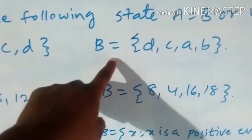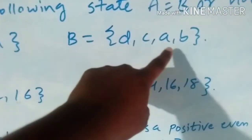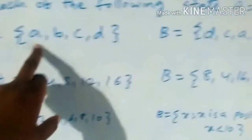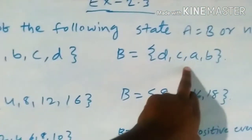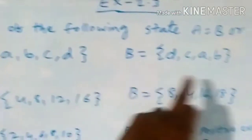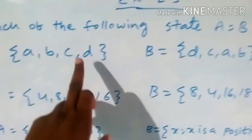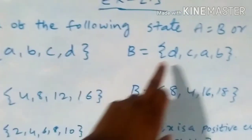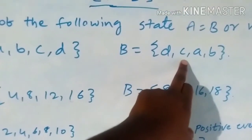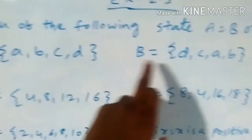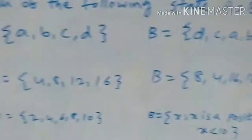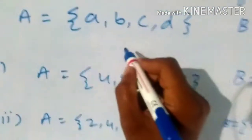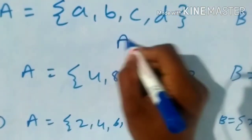B is equal to {d, c, a, b}. Now check: a is present in B, b is present in B, c is present in B, d is present in B. Also, all elements of B are present in A. So both sets are equal.